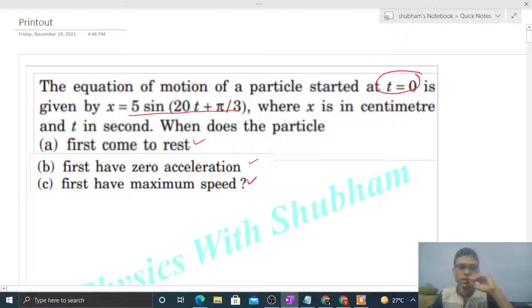From this SHM equation, we can interpret several things: the amplitude will be 5 centimeters, omega will be 20 radians per second, and the initial phase φ₀ will be π/3.